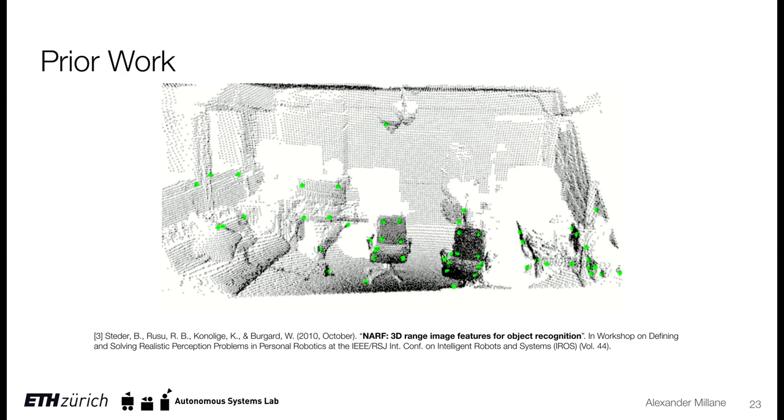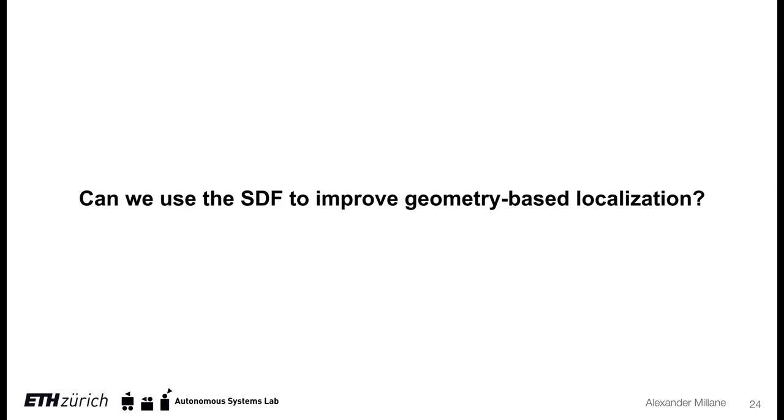Existing approaches to geometry-based localization advocate extracting features on surface boundaries, typically represented as point clouds. This paper aims to answer the question: can we use the signed distance function to improve methods for geometry-based localization?